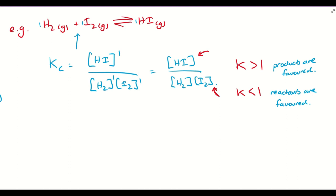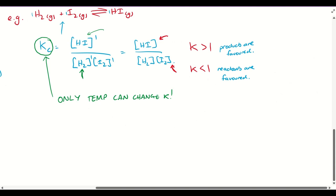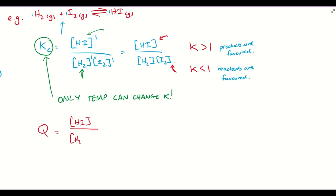An important property about K is that only temperature can change K — this is very important. You might think: what if I change the concentration of a product or reactant? Well, Kc is only a value for when the system is at equilibrium. If you add hydrogen gas, the system is no longer at equilibrium and must find a new equilibrium. However, we can give a value for something called Q. Q is the same expression, except Q can be calculated at any point in the reaction, whether at equilibrium or not. If Q equals K, the reaction is at equilibrium; if Q does not equal K, it is not.